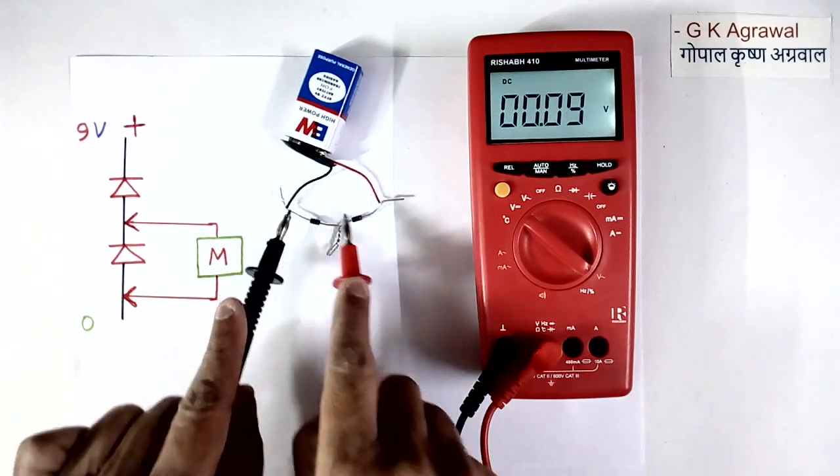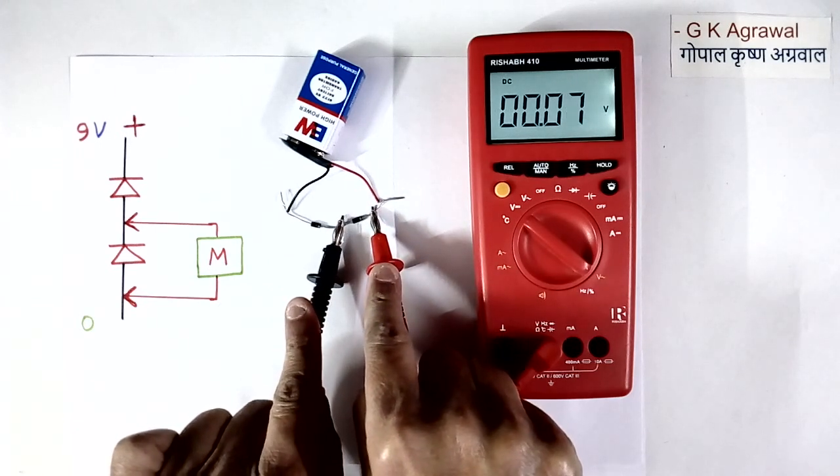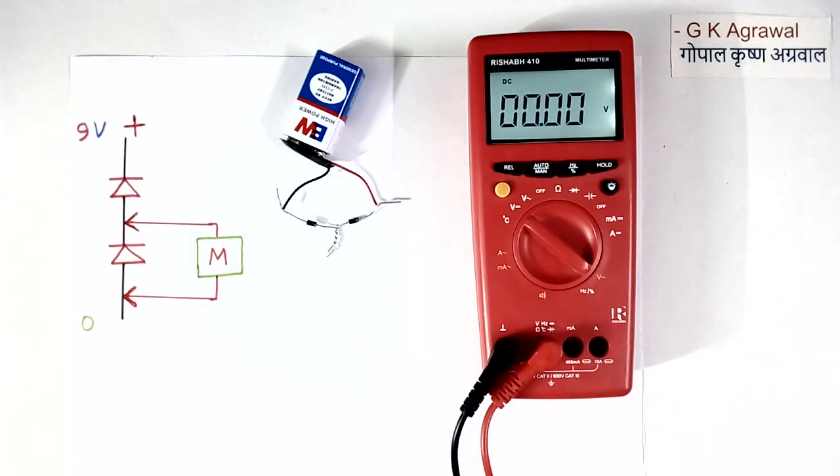Very less coming. Similarly here, very less is coming. You should read something because there is a leakage current, but it is not reading. Where 9 volt is gone? I will explain to you now.